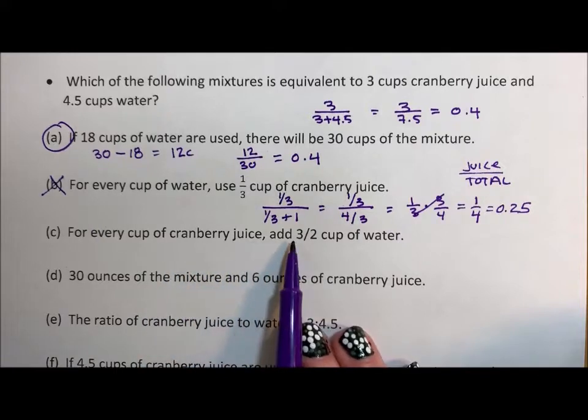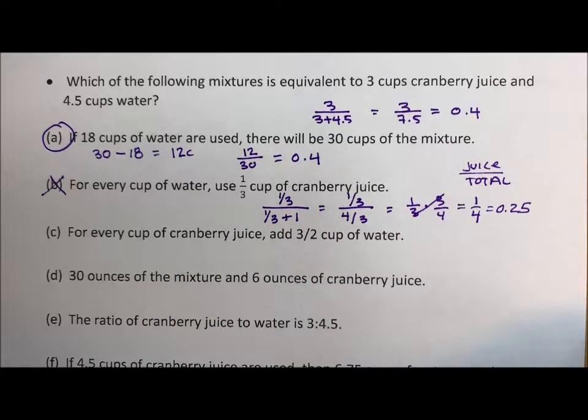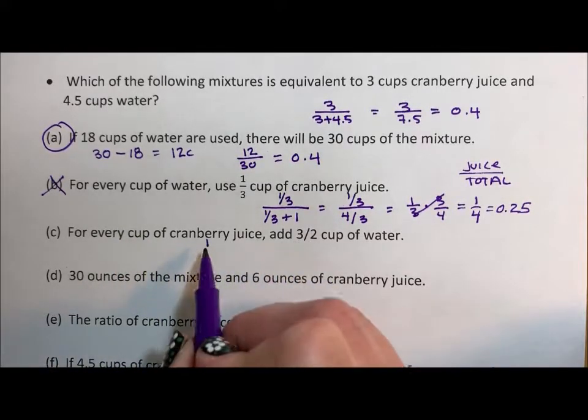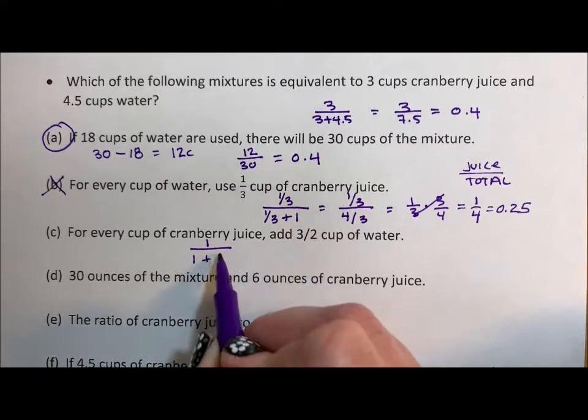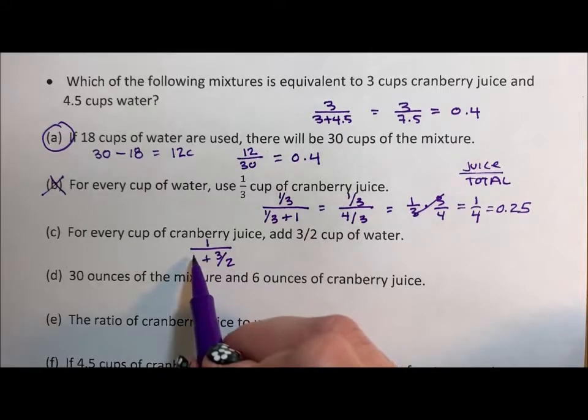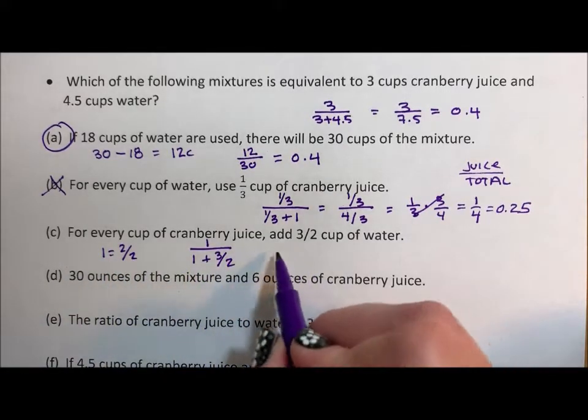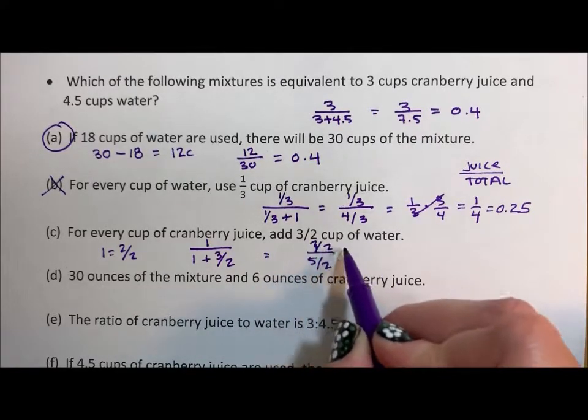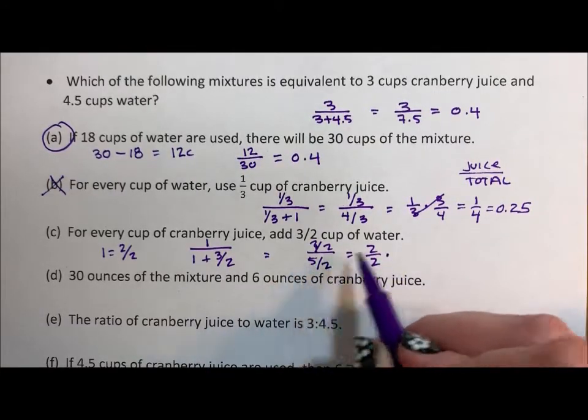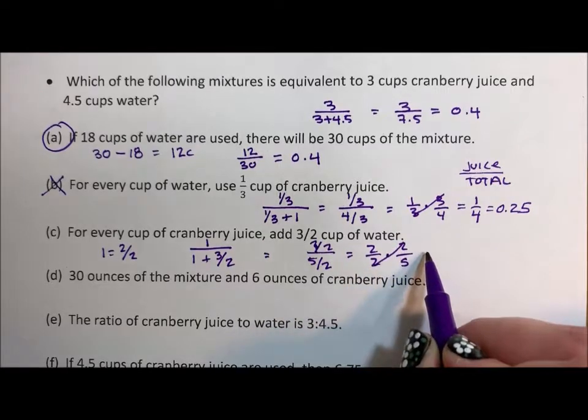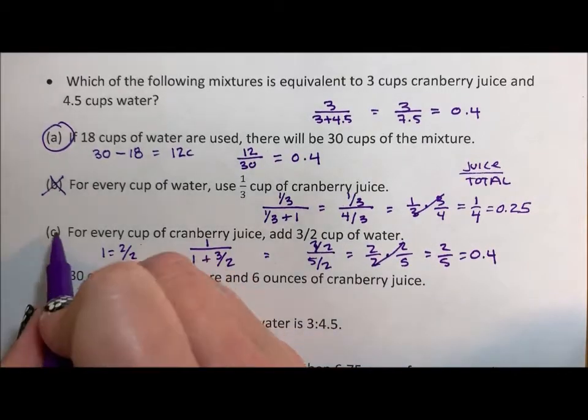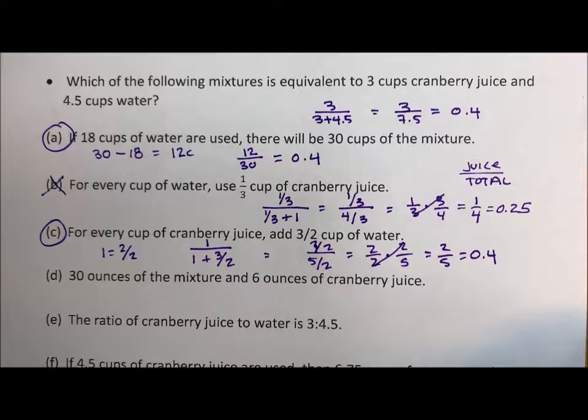For every cup of cranberry juice add three-halves cup of water. We're going to do the same thing we did here but this time we have a cup of cranberry juice and three-halves cup of water. So if we add that, one is equivalent to two halves, two halves plus three halves is five halves. So if we make this two halves up here we have two halves times flip this over two fifths, the twos cancel, we're left with two fifths which is the same as 0.4. And honestly you could be using a calculator versus doing all this by hand, I just like fractions.